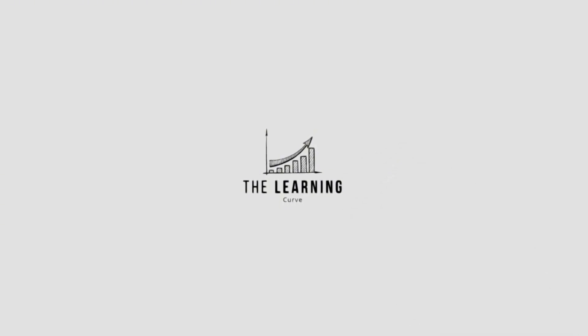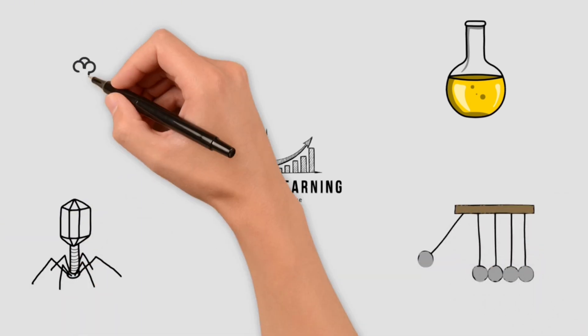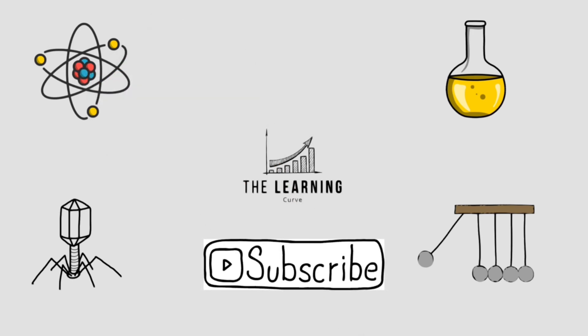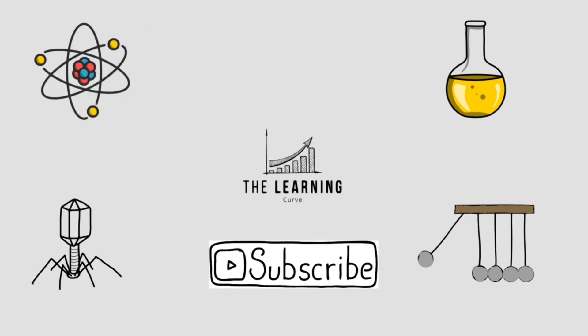And that's it. You now know how to write net ionic equations confidently, even when state symbols are missing. For more tips and chemistry preparation, check out our blog posts on our website. Don't forget to like this video, subscribe and drop a comment with any question you want us to cover next. See you next time!